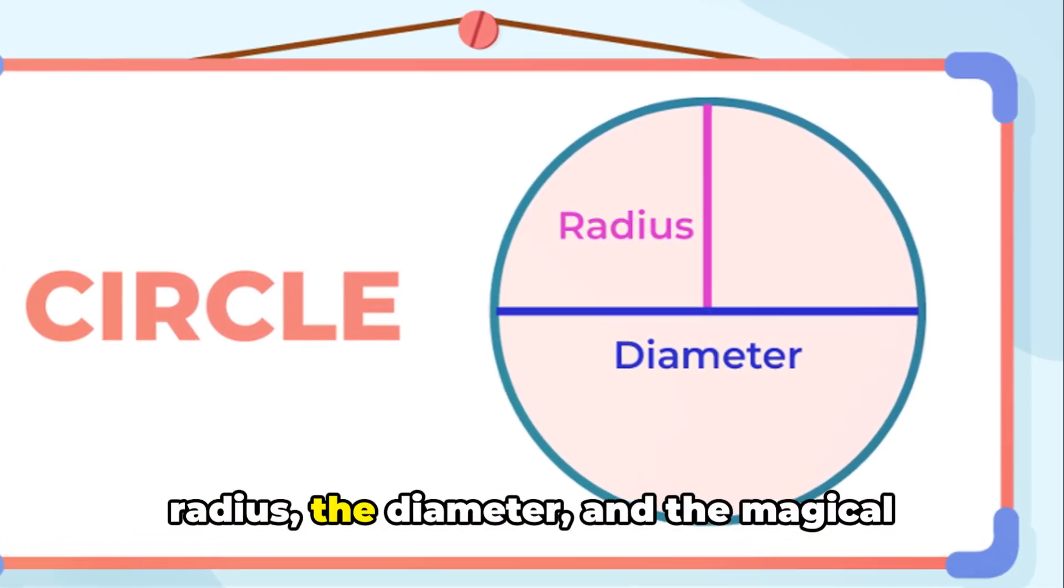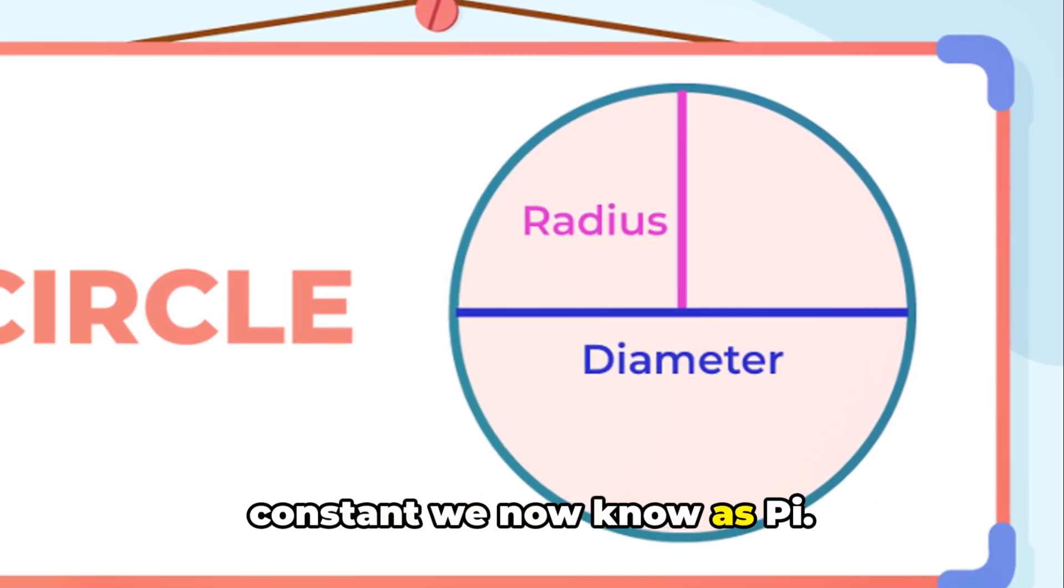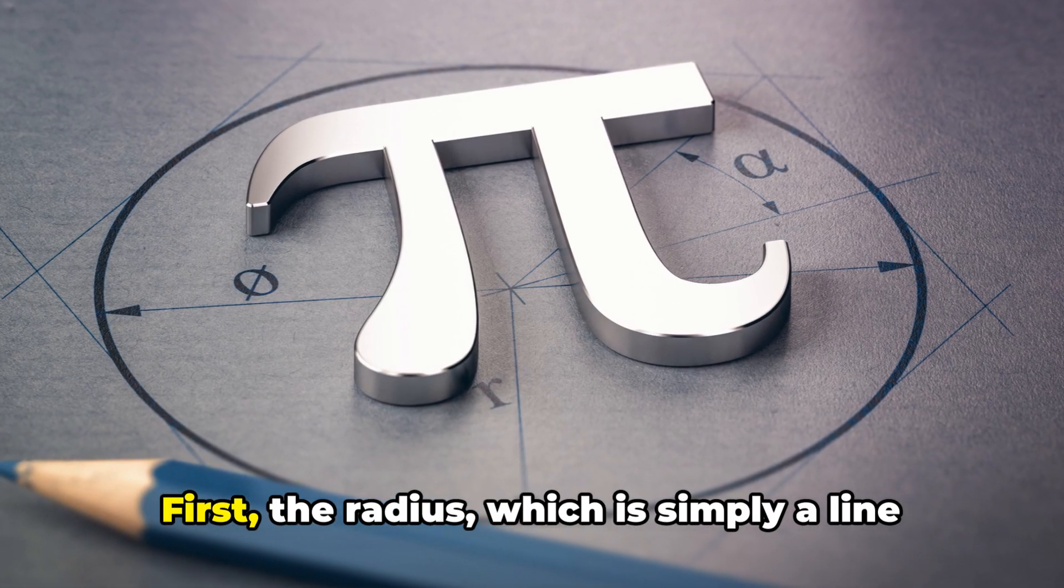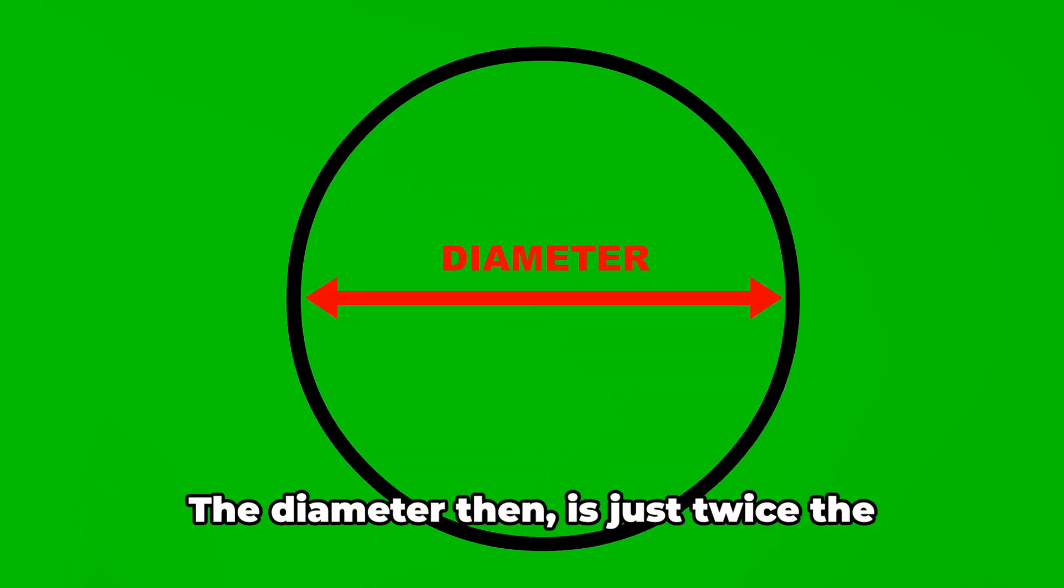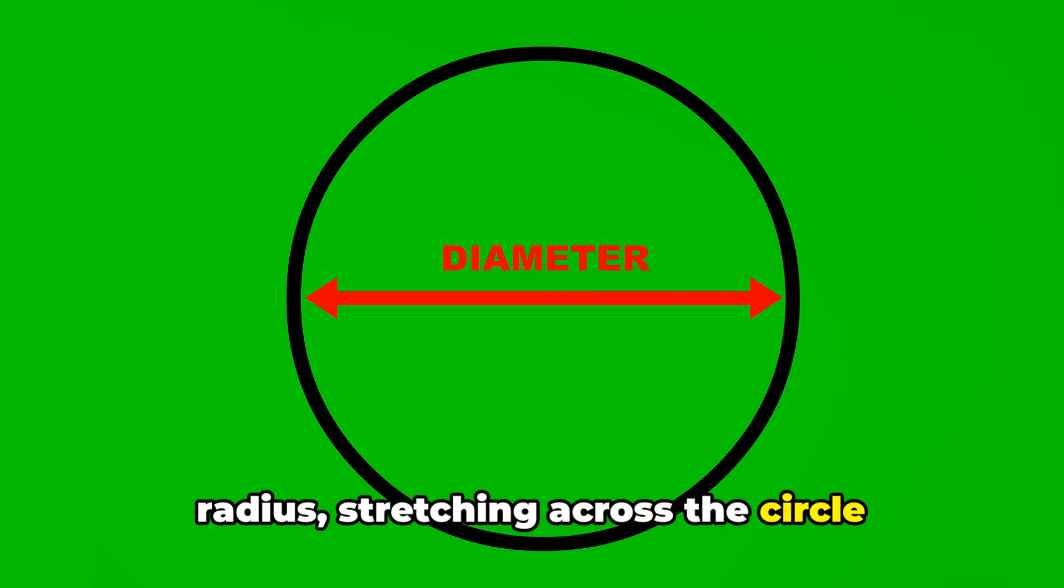The radius, the diameter and the magical constant we now know as pi. First, the radius, which is simply a line from the center of the circle to the edge. The diameter then is just twice the radius, stretching across the circle through the center.